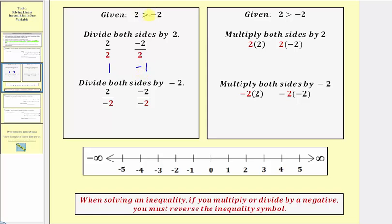If we divide both sides by positive two, we would have a one on the left and a negative one on the right. If we use the original inequality symbol, the greater than symbol, the inequality is still true. One is greater than negative one. So if we divide by a positive, we do not reverse the inequality symbol.